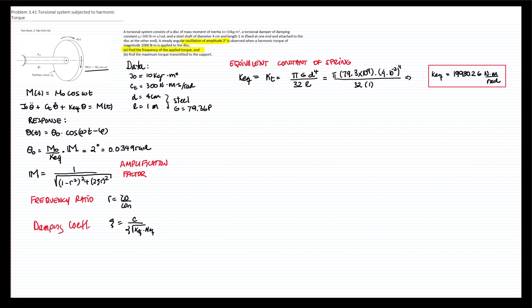Having the equivalent constant of the spring, we can calculate the natural frequency, which is defined as the constant of the spring divided by the mass. And the mass, in this case, is the mass moment of inertia. So we have to plug in the numbers, and we get, as a natural frequency of the system, 44.64 radians over seconds.